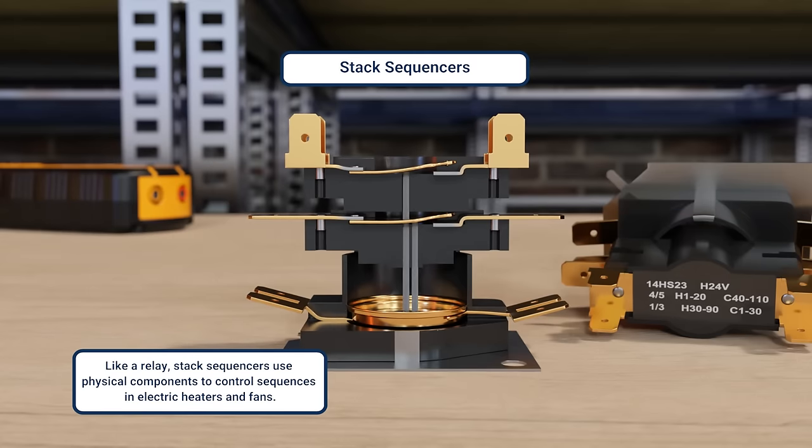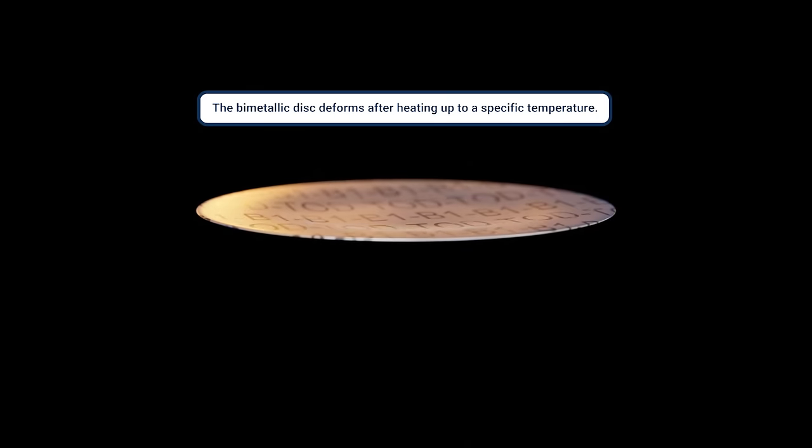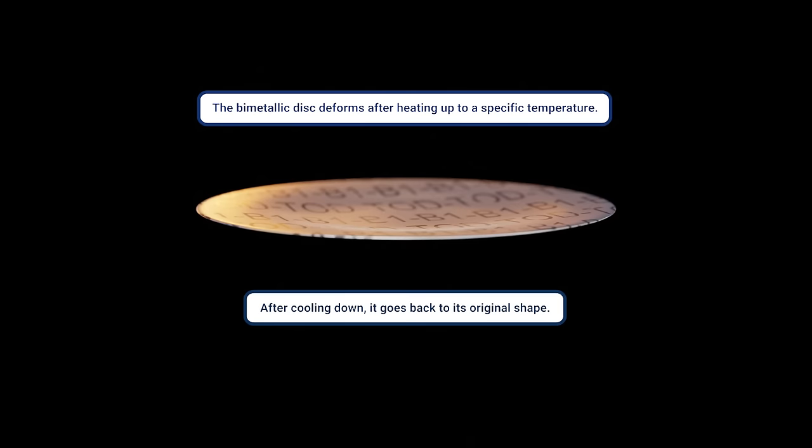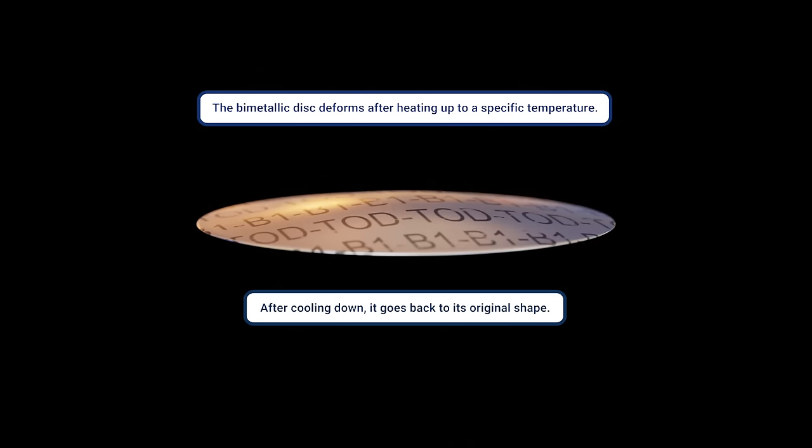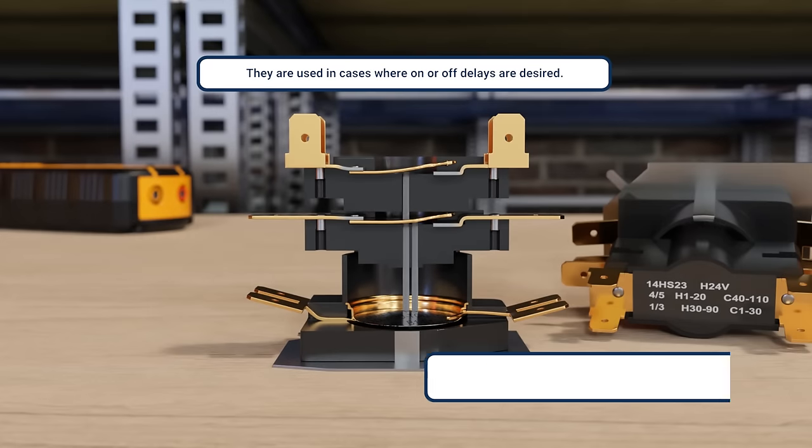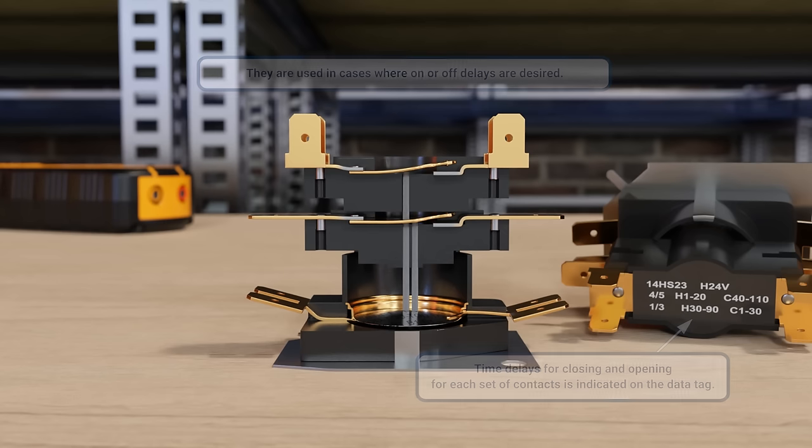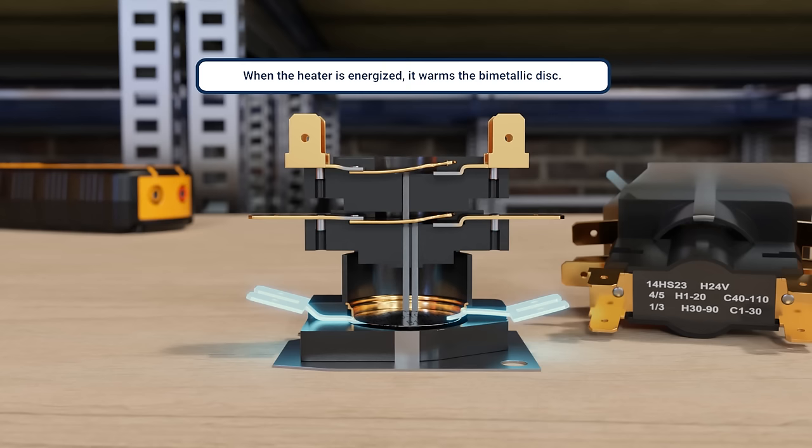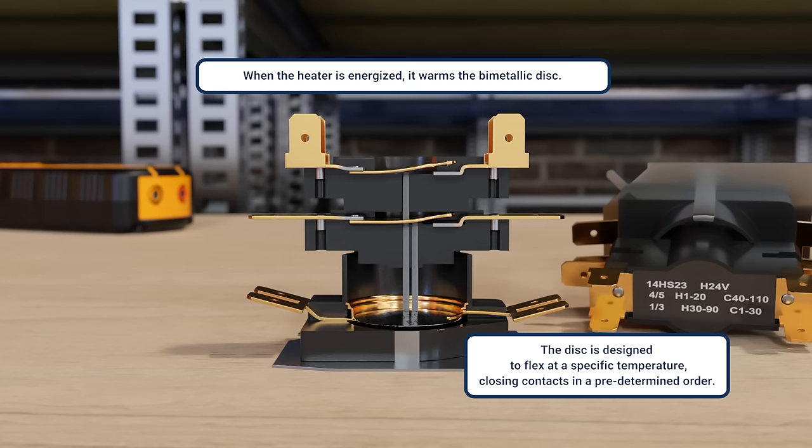They consist of a heater and bimetallic disk. They're used in cases where on or off delays are desired. They're becoming increasingly obsolete, as they're usually replaced with modern-day electronic controls. When the heater is energized, it warms the bimetallic disk. The disk is designed to flex at a specific temperature, closing contacts in a predetermined order.